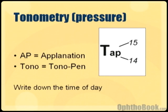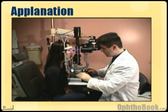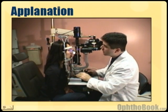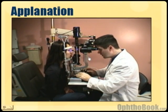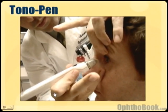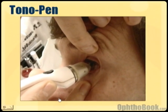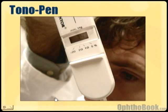The final vital sign is tonometry — that's just pressure. There are a couple of ways to check it. Applanation tonometry is built into the slit lamp: a little device with a blue light pushes on the eye and checks pressure — it's the most accurate method. Another way is with a tono-pen, a mechanical device used in the emergency room or for patients who can't get to the slit lamp. You tap it on the eye and get a reading — not as accurate, but sometimes that's all you have.